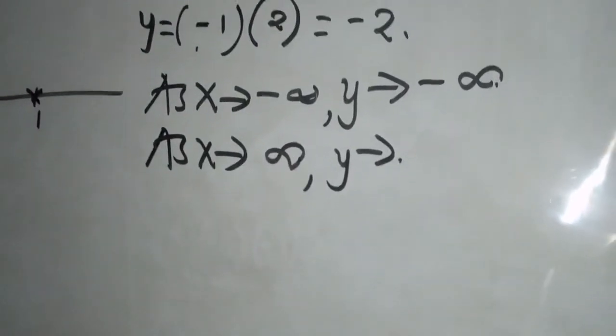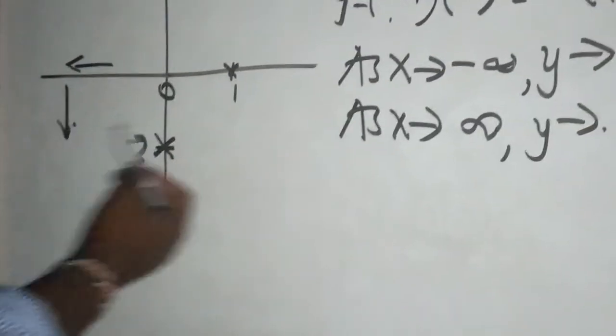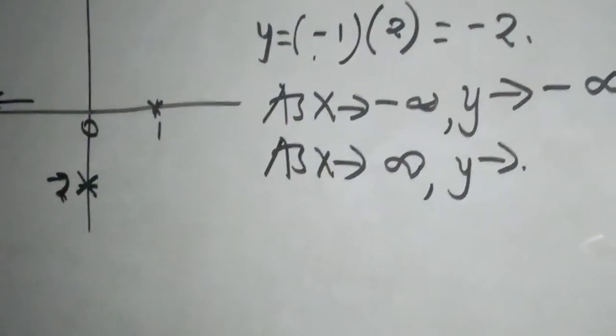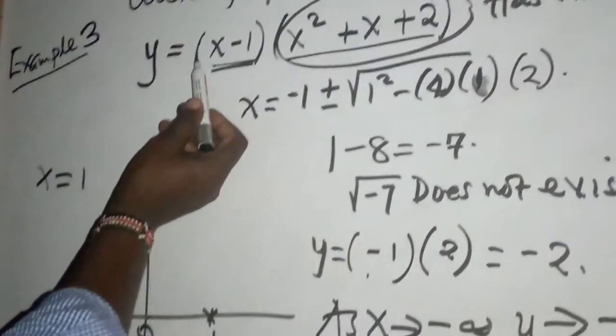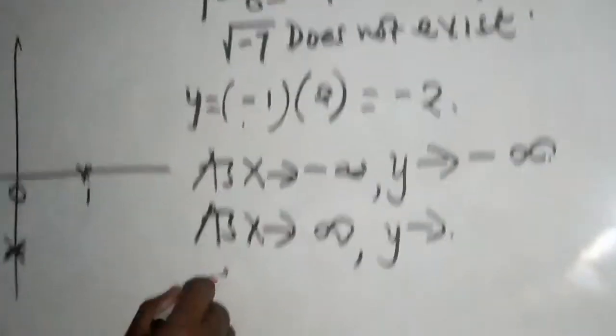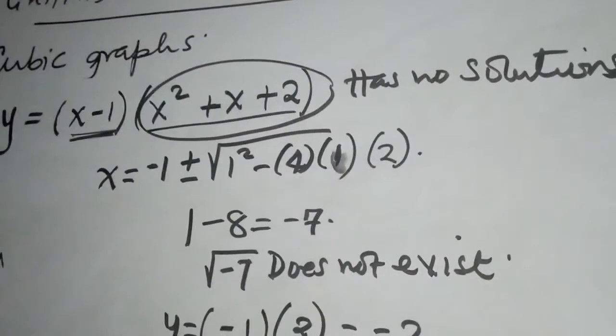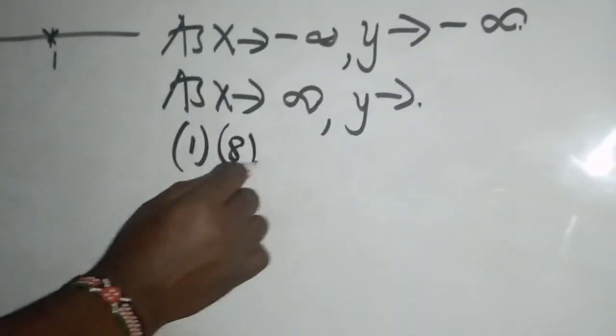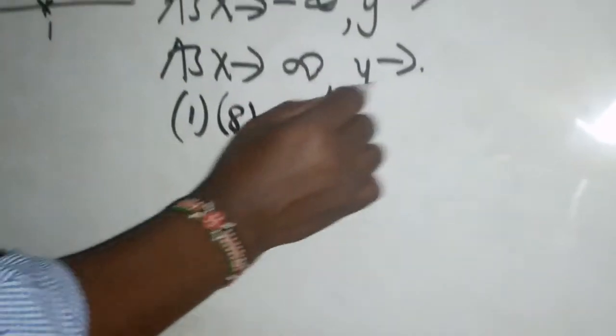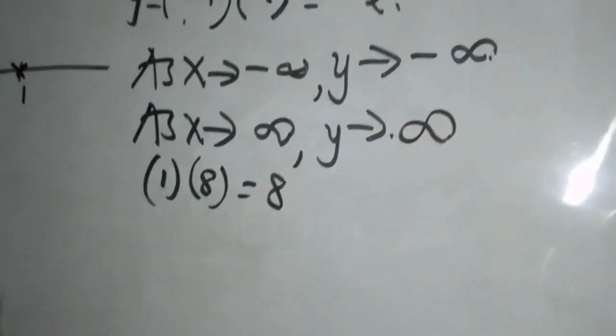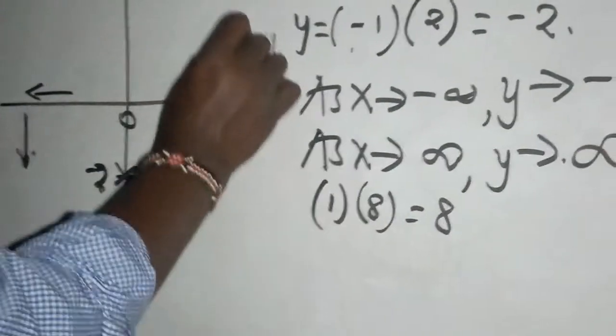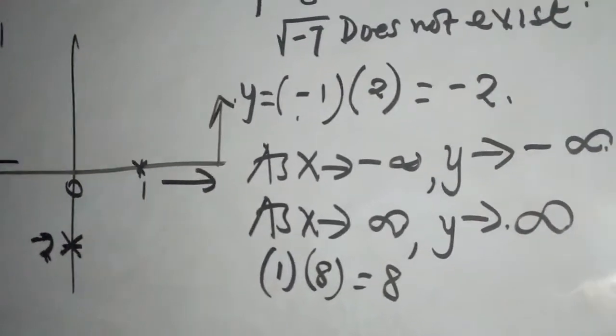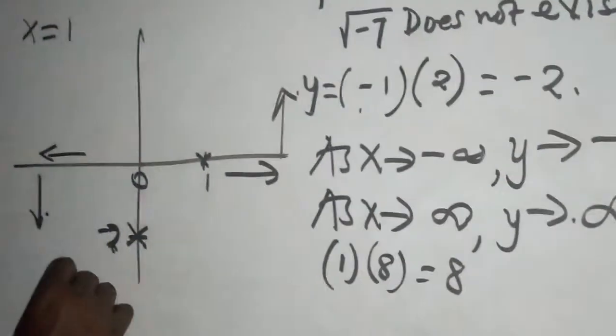We need to consider any value of x that is to the right of one, let's say two. The first bracket gives us two minus one is one. The second bracket is obviously positive because you're going to have four plus two, six plus two, eight. It's going to be positive eight. So as x tended to positive infinity, y tended to positive infinity.